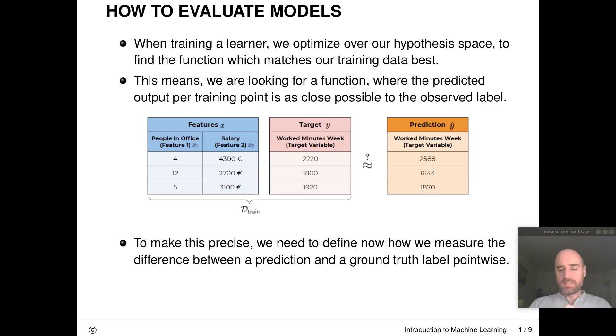So let's start from the beginning. When we want to train a learning algorithm we optimize over our hypothesis space to find a function which matches our training data best. So that means we're looking for a function where the predicted output per training point is as close as possible to our observed ground truth label.